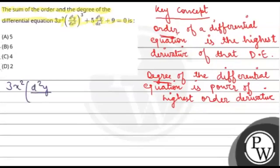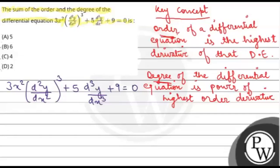तो हमें question में यह differential equation दे रखी है: plus 5 d³y/dx³ plus 9 is equal to 0. हम देख सकते हैं कि इस differential equation में highest order derivative है d³y/dx³, जो third order derivative है.